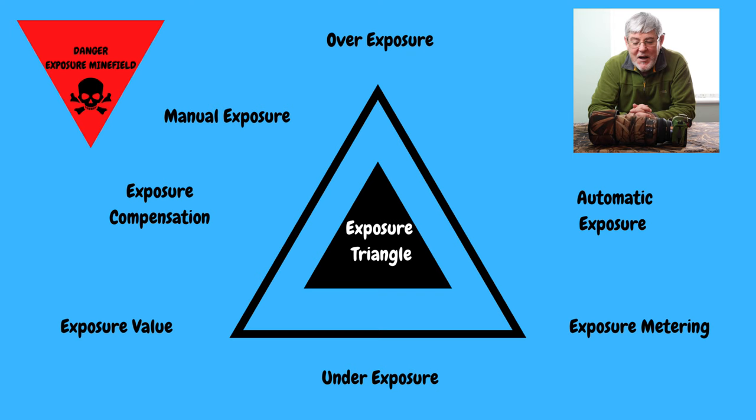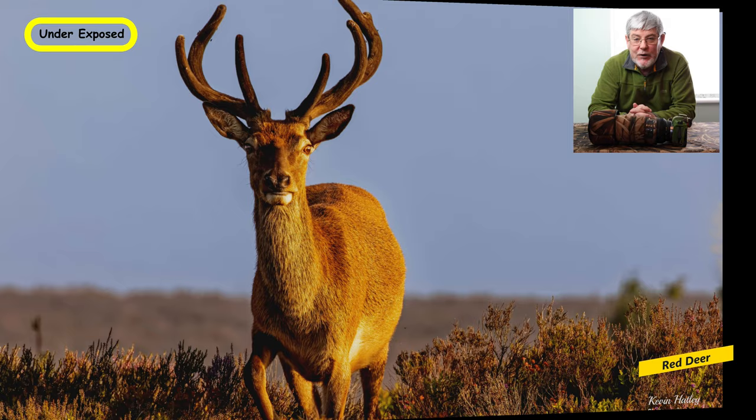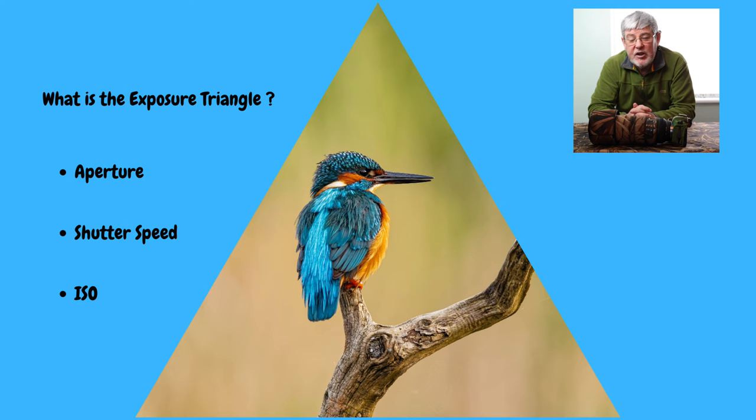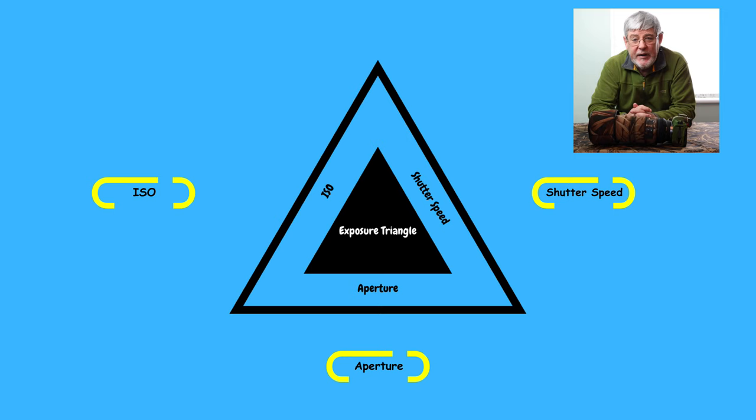When I first started looking at exposure, I went from everything — exposure metering, exposure triangle, exposure compensation, exposure values, manual exposure, automatic exposure, overexposure, underexposure — it's just a minefield of exposure, and trying to take it all in at one time was just too much. So what I want to do in this video is share my understanding of the exposure triangle. We'll look at what exposure means, then look at the exposure triangle and break it down to its three constituent parts — the aperture, the shutter speed, and the ISO — and we'll actually build an exposure triangle together.